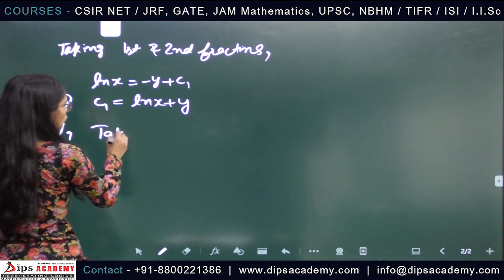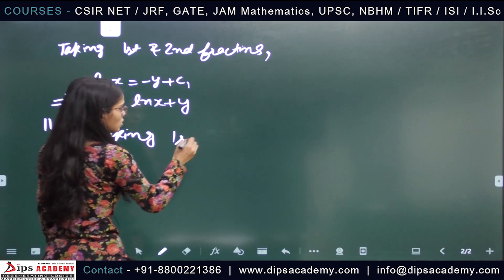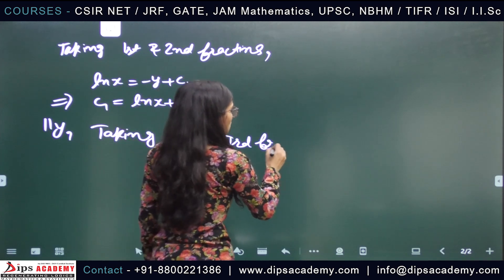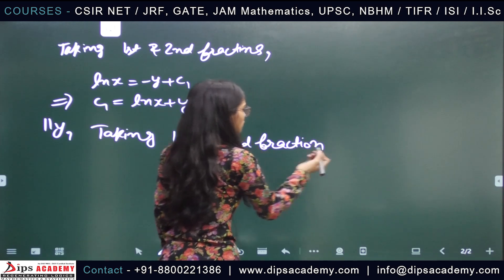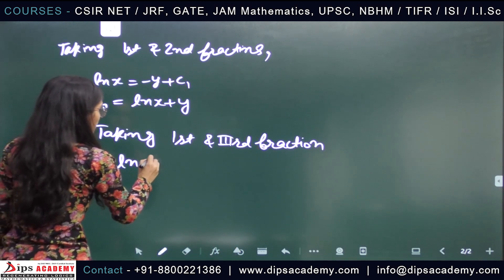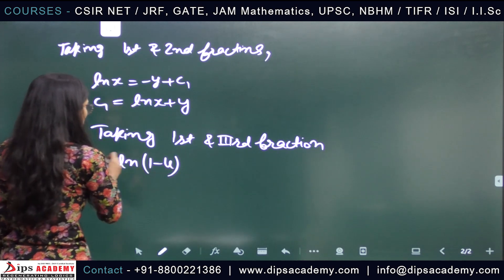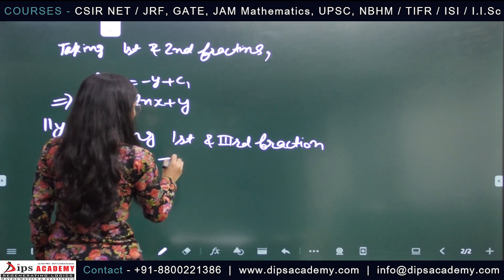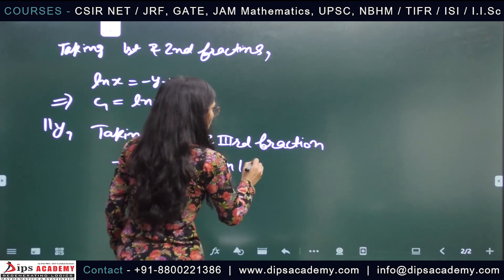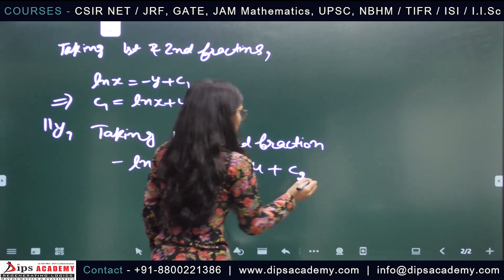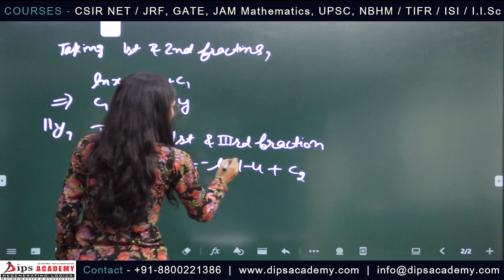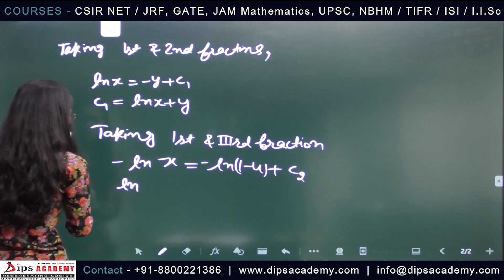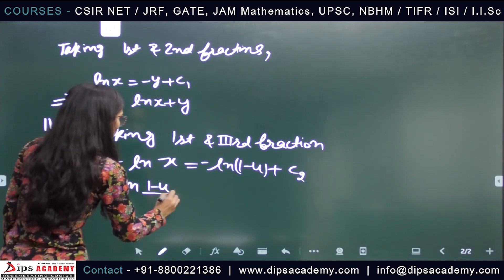Similarly, taking the first and third fractions, we get ln x equals ln(1 − u) plus c₂. Therefore, c₂ equals ln((1 − u)/x).